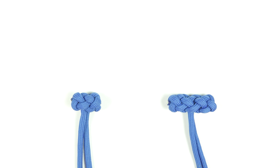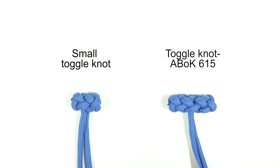So here you can see two toggle knots. On the left we have a small toggle knot and on the right we have the original ABOK 615 toggle knot. As you can see, the small toggle knot is about half the size of the original toggle knot. This is because it is based on the 5-part 3-bight turk's head, while the original toggle knot is based on the 8-part 3-bight turk's head. If I could compare the size to any knot, the small toggle knot would be about the size of a lanyard knot, while the ABOK 615 is about twice the width.